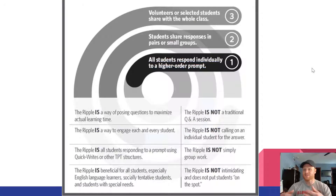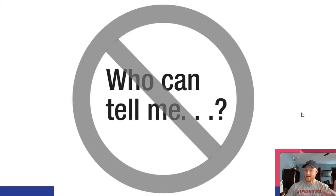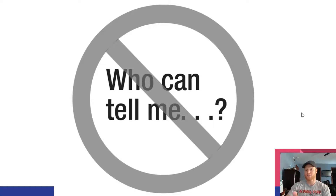The third ripple is to have volunteers or selected students share with the whole class what they discussed in their small groups or pairs. One thing the book emphasizes is avoiding asking the class 'who can tell me?' — for example, 'who can tell me why the sky is blue?' We want students to respond individually first, then share in a small group or pair, and then expand to whole-class discussion. In a class of 30 students, as soon as you call on Johnny, the other 29 are off the hook. We want everyone actively involved.